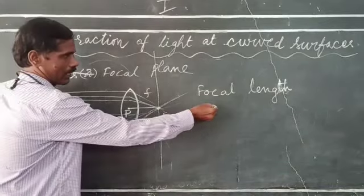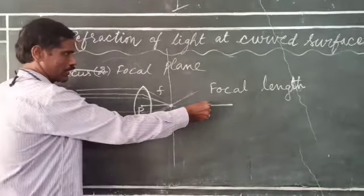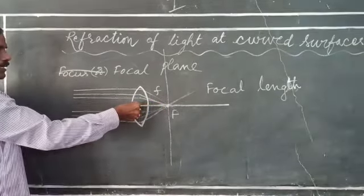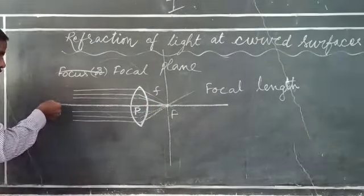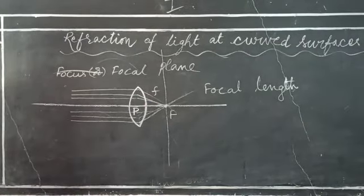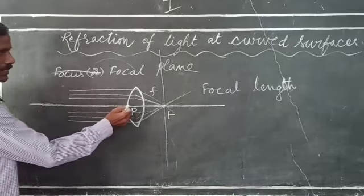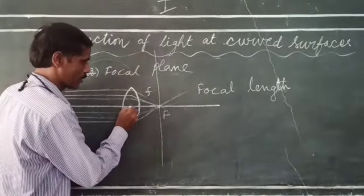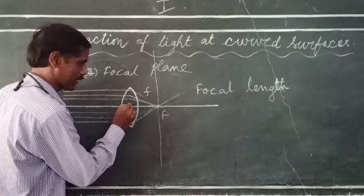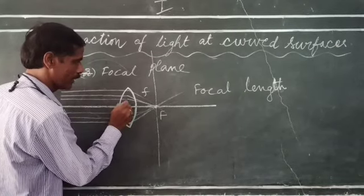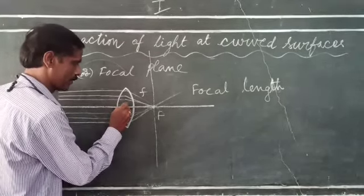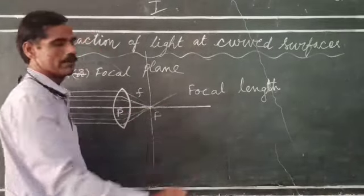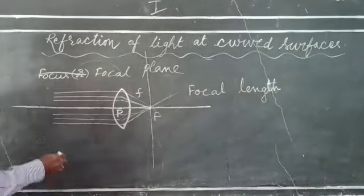Principal axis is the horizontal line which passes through the pole of the lens. Principal axis is defined as the horizontal line which passes through the geometric center or pole of the lens, and which also passes through the focus of the lens.